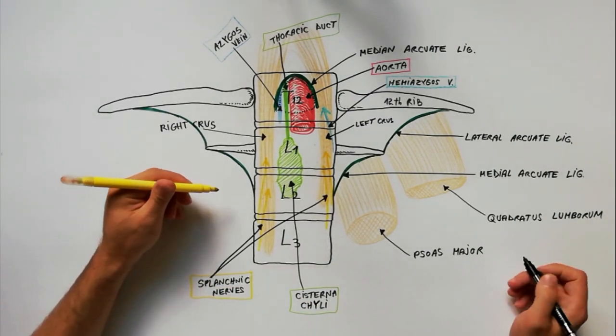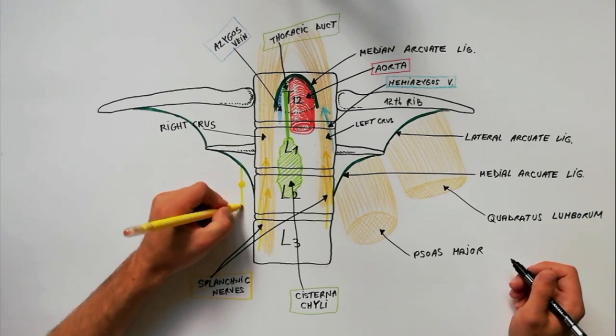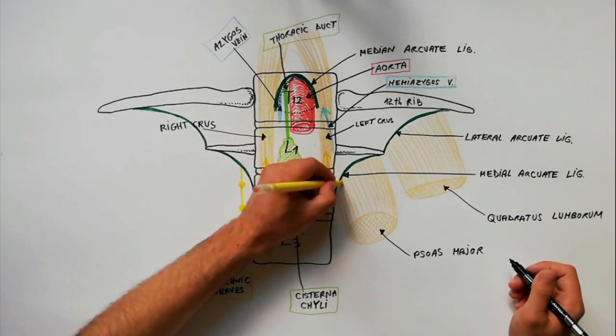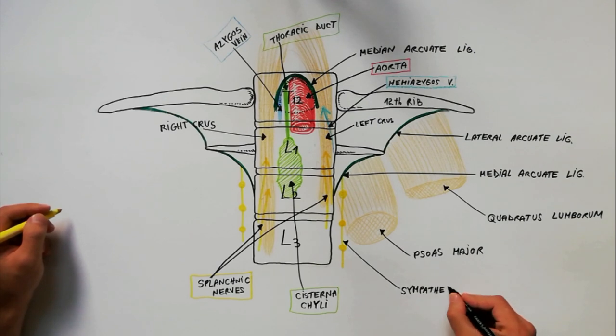The sympathetic trunk is passing behind the medial archoid ligament of the lumbar part of the diaphragm.